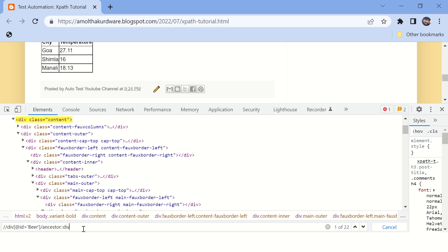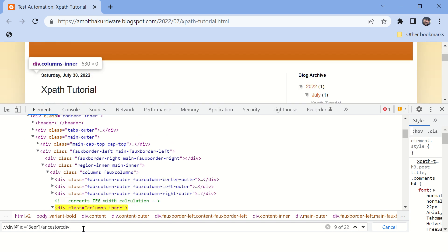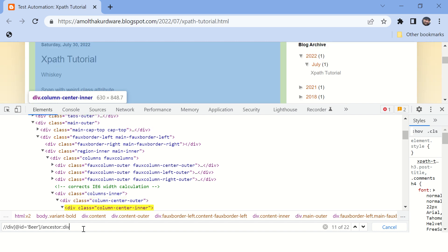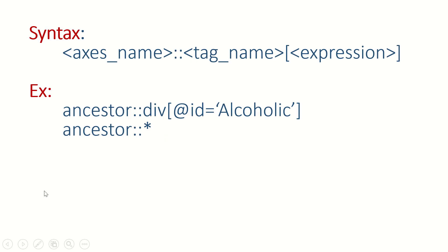After the double colon, you can specify the tag name of the ancestor. If you type 'div' here, it will find all the div tags which are ancestors of this beer element. You can see in the diagram that when the current tag is beer and ancestor div is selected, it highlights all the div tags which are in the hierarchy of this element.